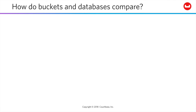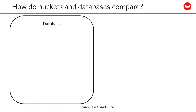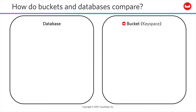You're likely already familiar with the traditional relational database. In those systems, the top-level container is called a database. In Couchbase, as you've seen, it is a bucket. A bucket is an unstructured document container — perhaps more easily thought of as a key space.